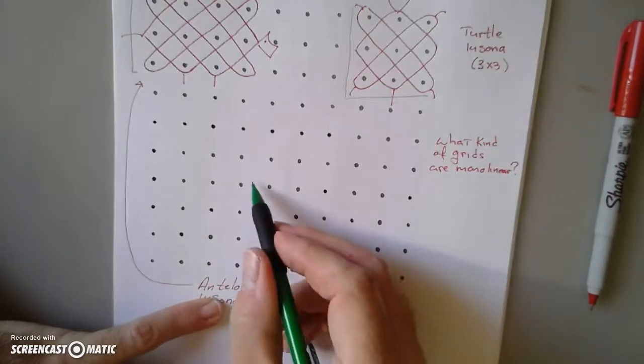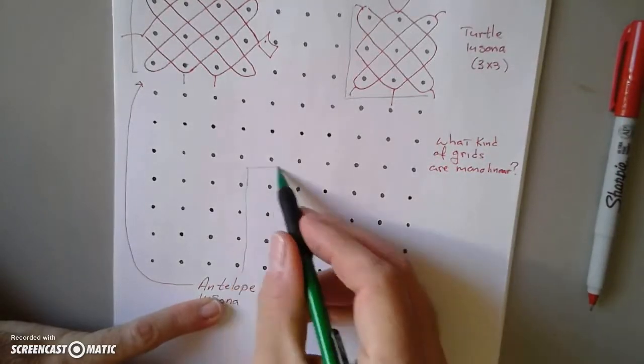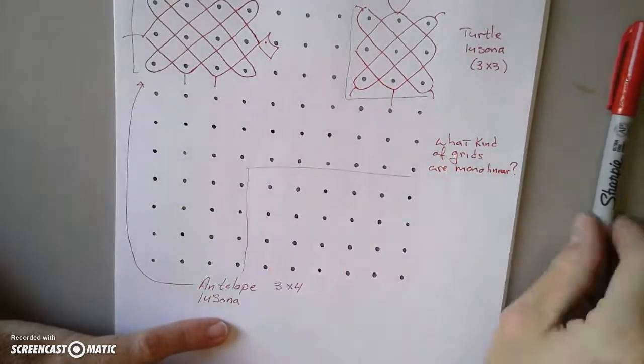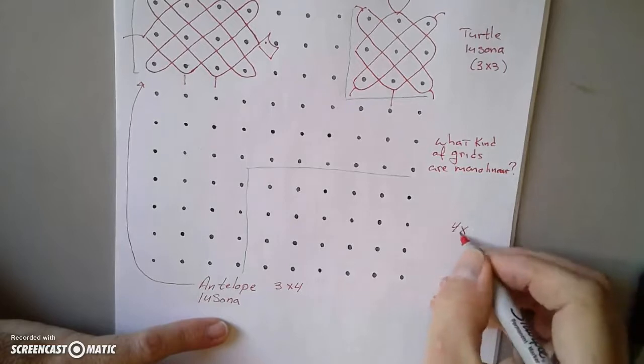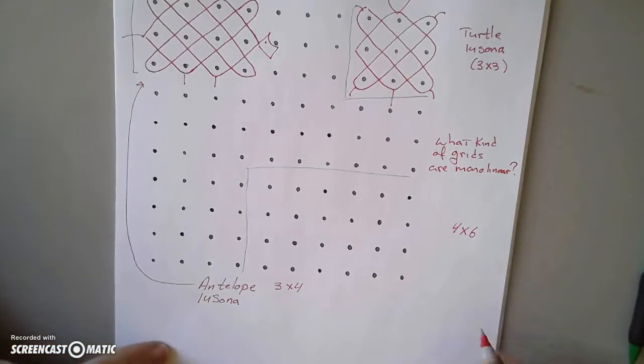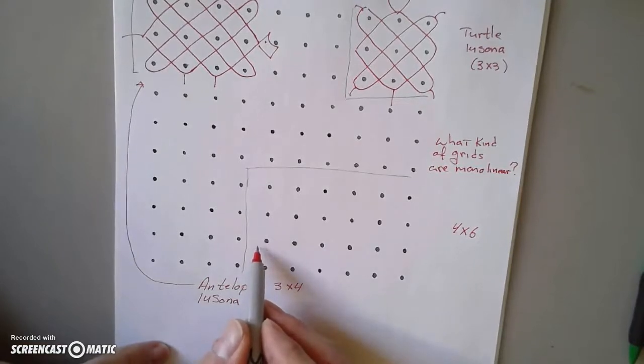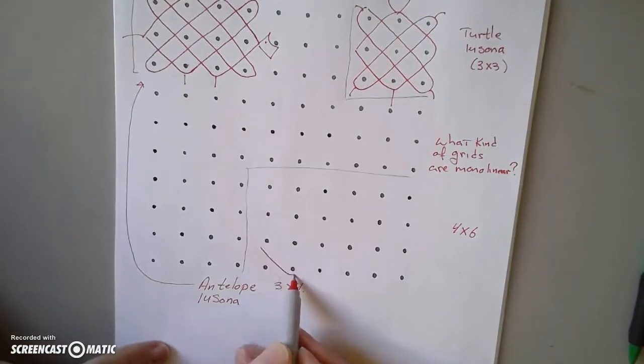So what if I did this one? This is four by six. What if I did four by six? What would happen? If I were to say, start right here, using the plated algorithm, doing my 90 degree turn,